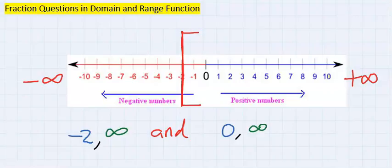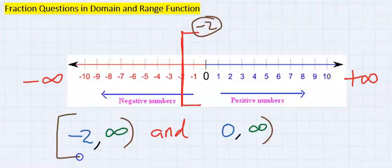However, when the domain starts going towards infinity, the range will only start going towards infinity and infinity is always open. Minus two being our least value was inclusive in the function and when we got minus two, our least range was zero.